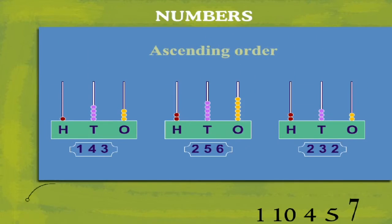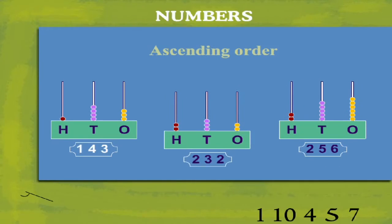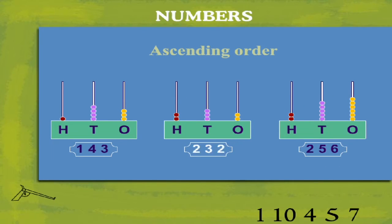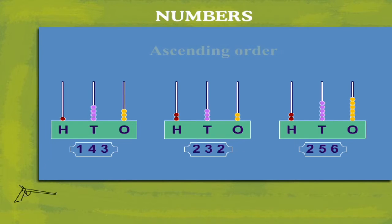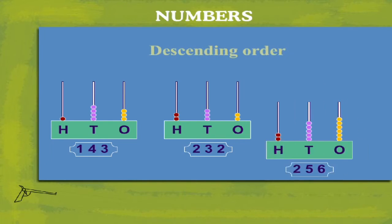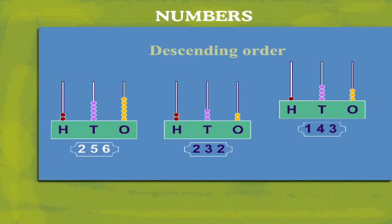What is their ascending order? Yes, it is one hundred and forty three, two hundred and thirty two, two hundred and fifty six.